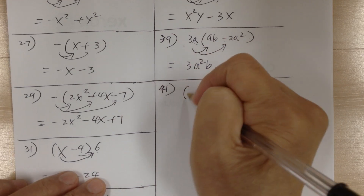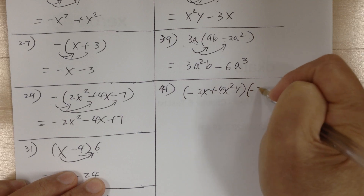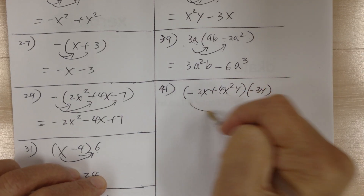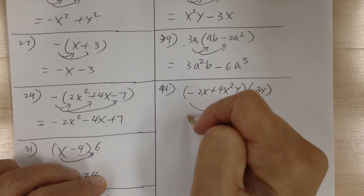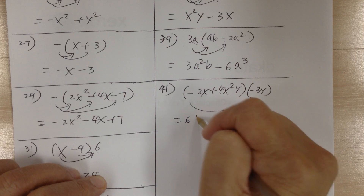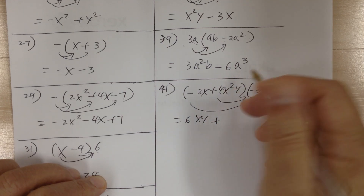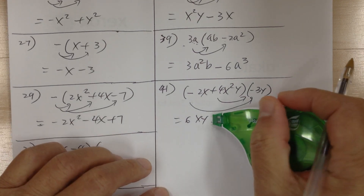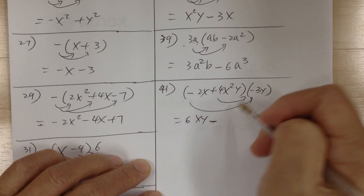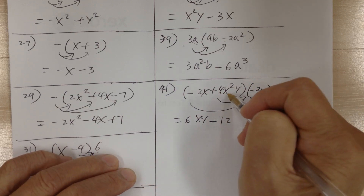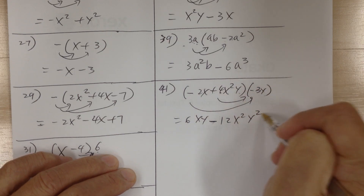Number 41. You have (negative 2x plus 4x squared y) times negative 3y. Distribute: minus times minus is plus, 2 times 3 is 6, x times y gives xy, so 6xy. Then positive times negative is negative: 4 times 3 is 12, and going down the alphabet gives x squared y times y, so minus 12x squared y squared.